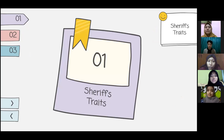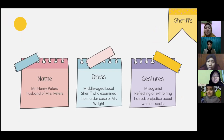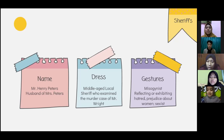I'm going first. I would like to tell about the Sheriff's traits. The Sheriff has named Mr. Henry Peters as husband of Mrs. Peters. The Sheriff is dressed as a middle-aged local sheriff who examined the murder case of Mr. Wright, and he turned the investigation over to Henderson. The sheriff has some gestures — one of them is misogynist, which is reflecting or exhibiting hatred, prejudice about women, and sexism.